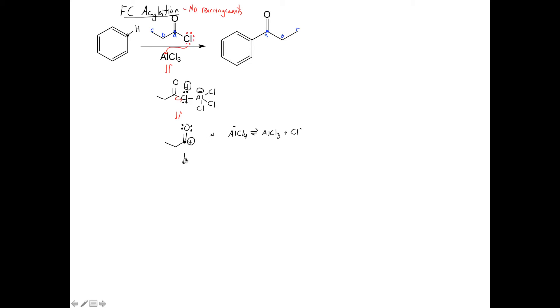I can move this lone pair down there, and that stabilizes that positive charge. So the resonance structure we can see is a carbon now with three bonds to this O, and that oxygen now has a positive charge associated with it. So because of this extra resonance structure that we see, we are not going to have any rearrangements that occur.